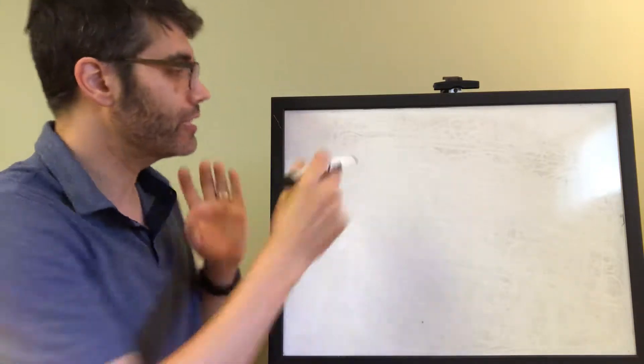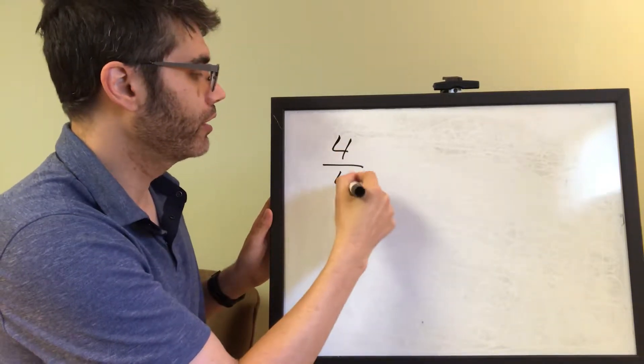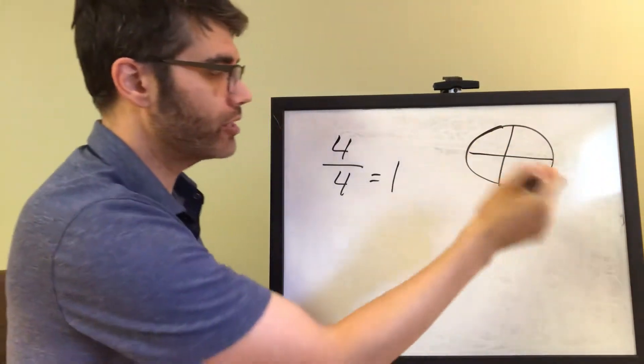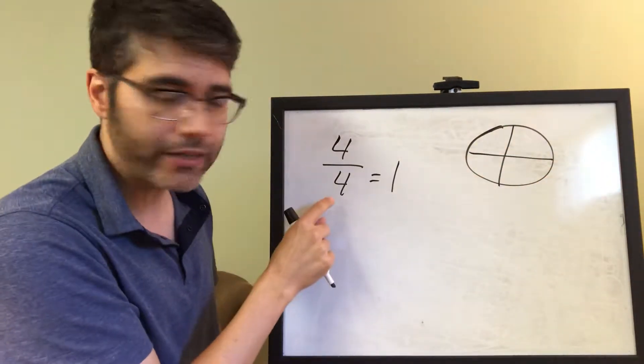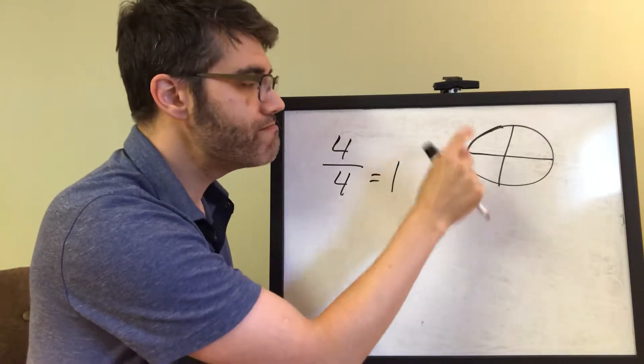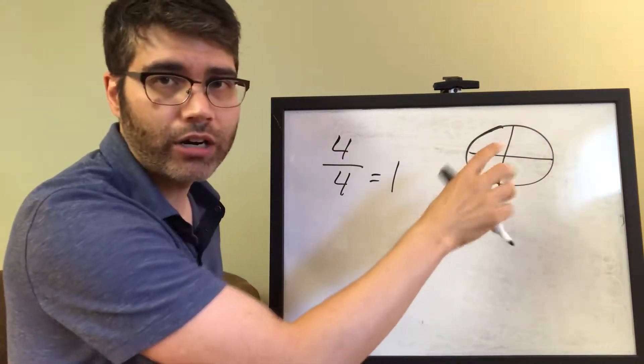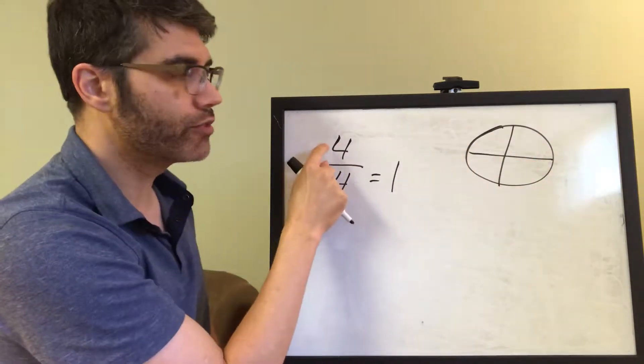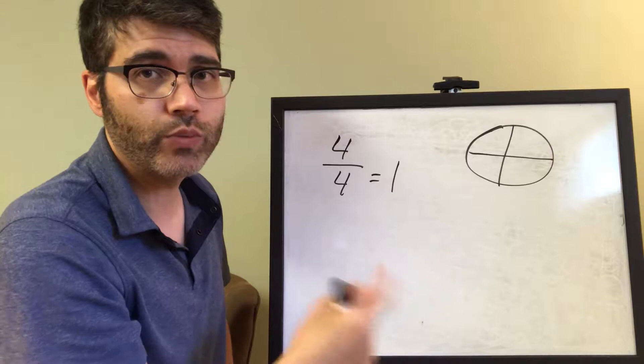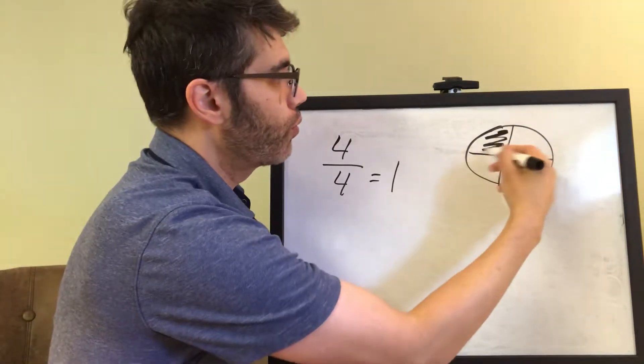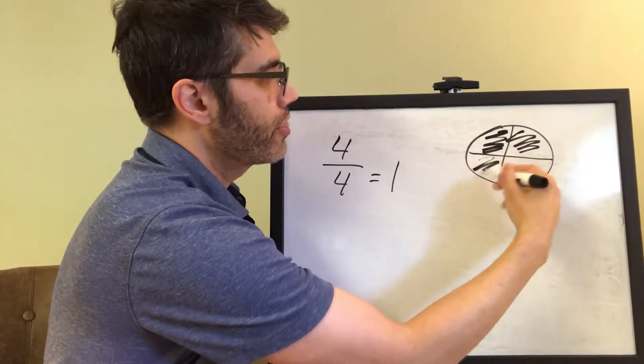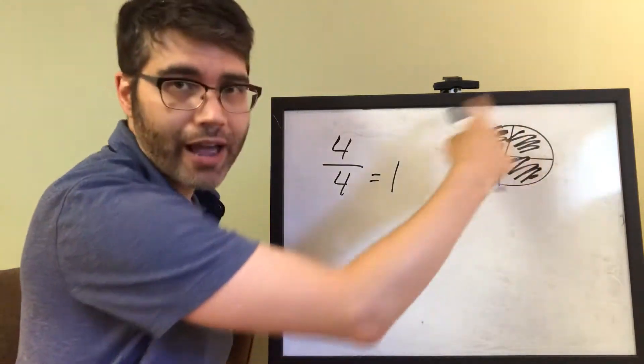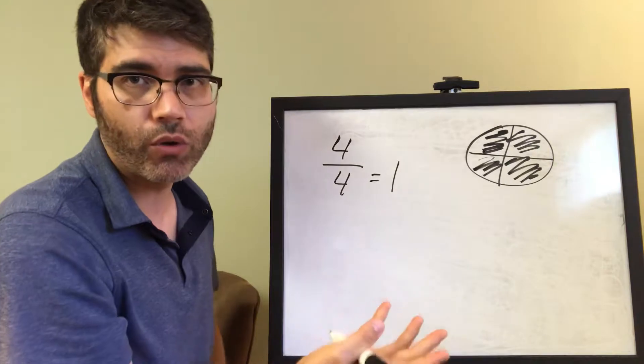And why is that true? Let's say that we have 4 over 4. That equals 1. So let's say that we had a pizza that was split into 4 slices. The denominator tells us how many slices there are in total. So here, there's 4 slices in total. The numerator tells us how many slices we choose. So if we choose 1, 2, 3, 4, well look at that. We've chosen the entire pizza. The whole pizza. And 1 is a whole.